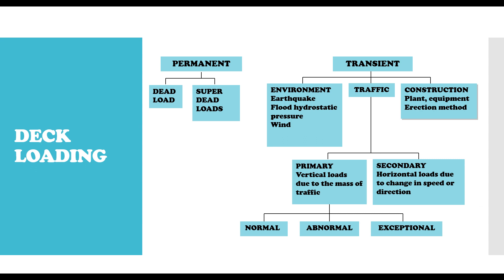The transient load is actually more complicated compared to the permanent load. You have to follow the code specification and guidance in order to properly determine the primary load. What is also important is the position of application, because unlike the dead load — which you apply over the whole structure because it's just the weight — in the case of traffic load, the code specifies modes in which you can apply this traffic load. This brings us to some definitions of terminologies majorly used in bridge loadings, so you can understand how to position or apply your primary live load, which are the HA loading and the HB loading.